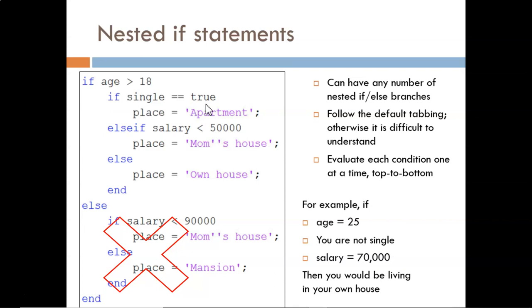Next, we check if your salary is under 50,000. That is false, so we continue on. Next, we reach an else, so we go down that branch, and place is set to equal own house.